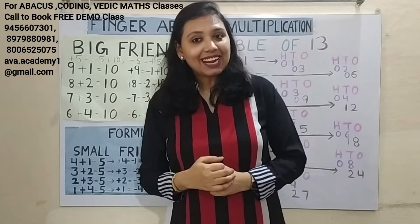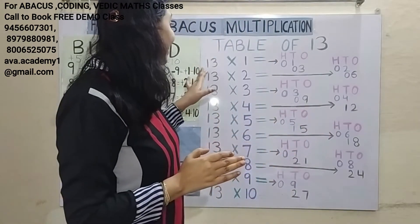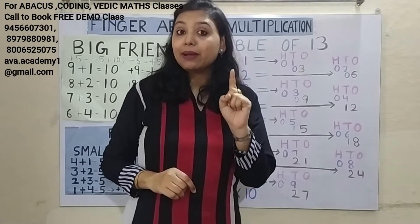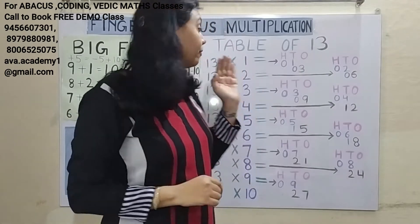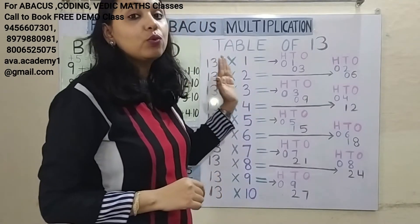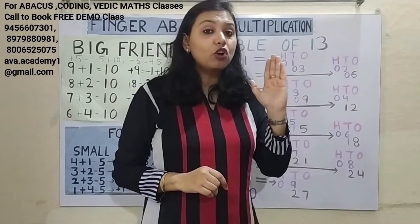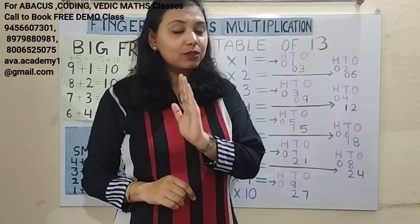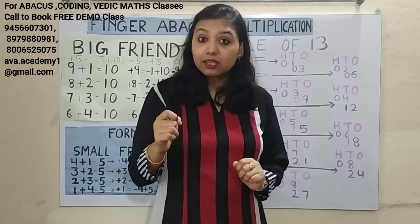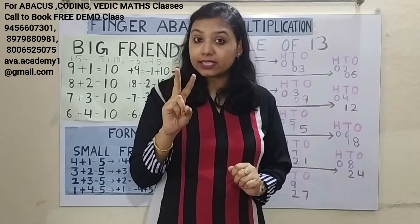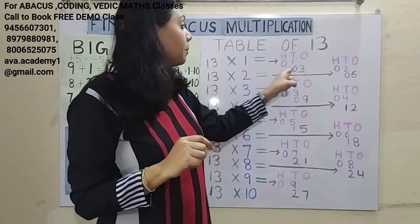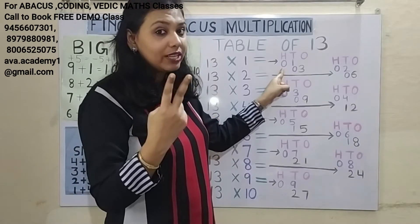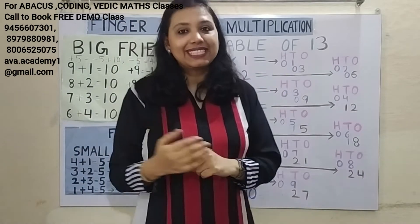Okay friends, now let us start the class. You already know that there are 3 rules in multiplication. First, you have to learn the table up to 9. Second, you have to do the calculation from left to right — that means you solve the 100s first, then 10s, then 1s. And the third rule is you have to convert the number into 2 digits: if the answer comes in 1 digit, you put a 0 to make it a 2-digit number.